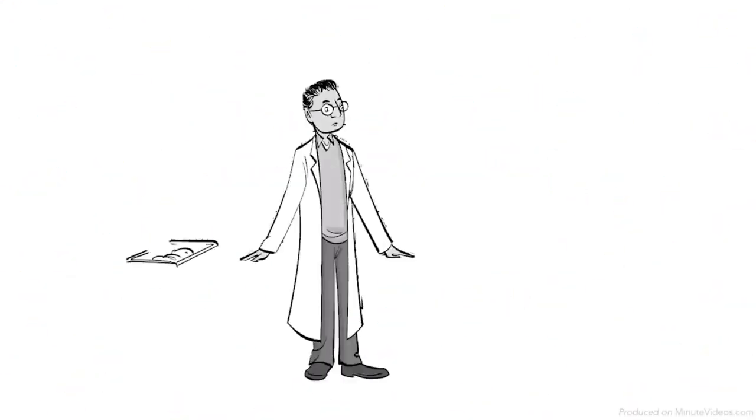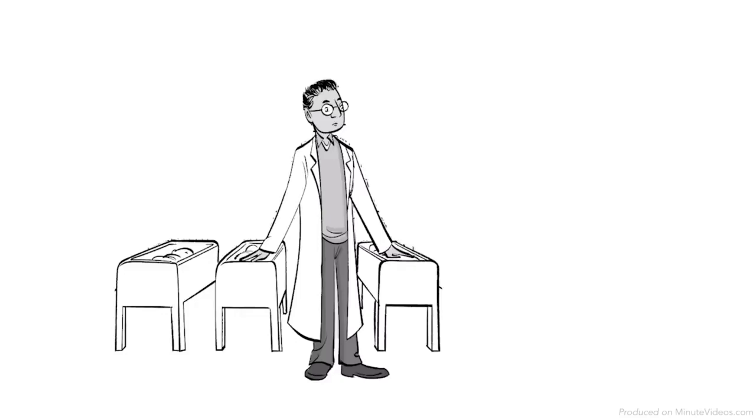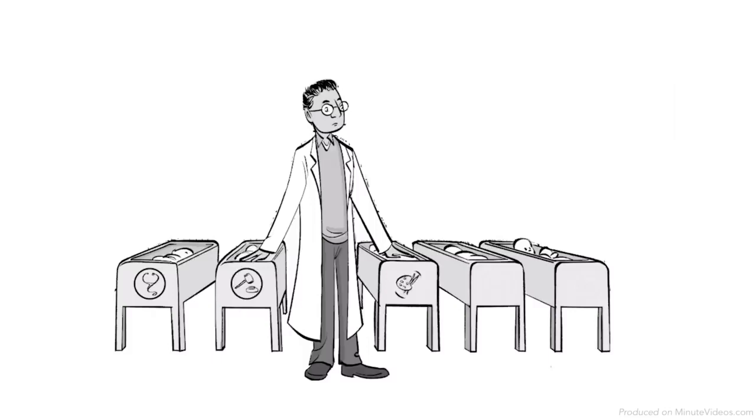John B. Watson famously claimed that if he were to be given a dozen healthy infants, he could shape them into anything – doctors, lawyers, artists, beggars or thieves – regardless of their background or genetic predispositions.